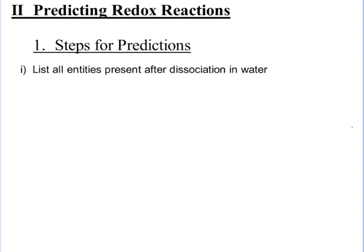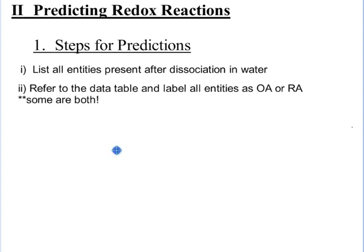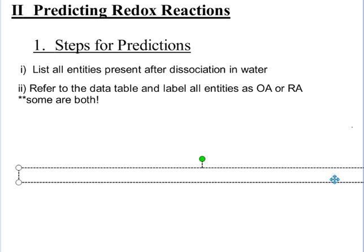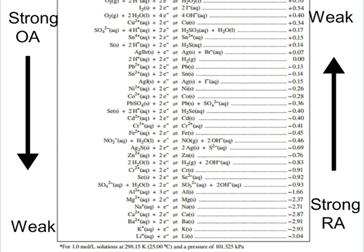Let's go to step two. After we have our list and we've considered the water environment, we're going to refer to the data table and label all the entities as OAs or RAs. And some are both. So we're going to notice that right away. Looking at our table, if it's found on the left side, remember it's an OA. If it's found on the right side, it's an RA. The first one we listed was magnesium. It was magnesium metal.